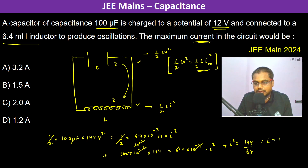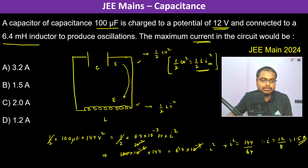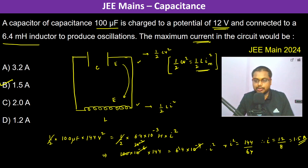Therefore I becomes 12 divided by 8, which is 1.5 amperes. This is the maximum current, so therefore B is going to be the answer.